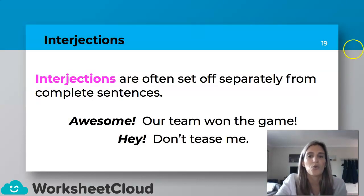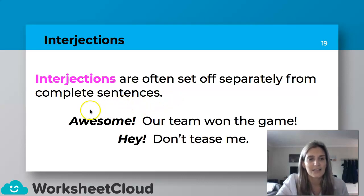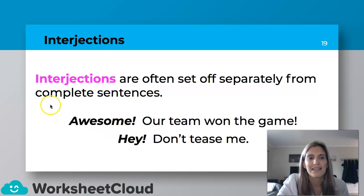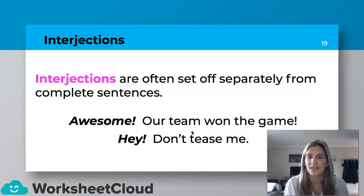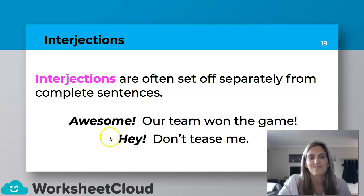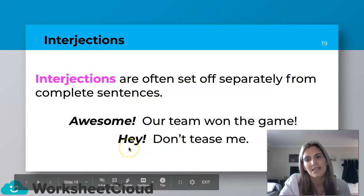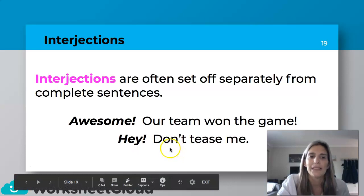Interjections are often set off separately from complete sentences. So this is how we would write it: you write the interjection — for example, "Awesome!" with an exclamation mark — and then you write your complete sentence: "Our team won the game." It adds color to our sentence and that level of praise and emotion. Another example: "Hey! Don't tease me." So "hey" is the interjection and "don't tease me" is the complete sentence. That's how we write interjections.